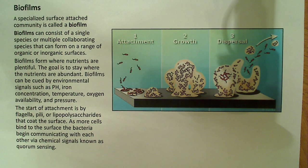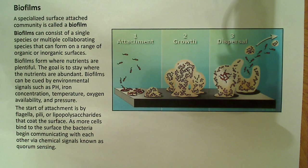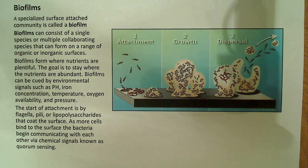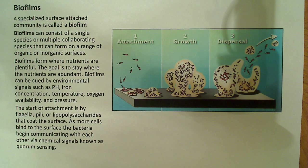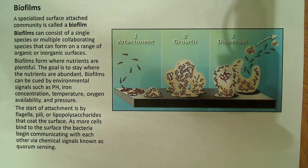Now that we have an intuitive sense of something in the environment that we can understand, let's talk a bit more specifically about what biofilms are. They're specialized surface-attached communities, and these biofilms can consist of a single species or multiple collaborating species that can form on a range of organic and inorganic surfaces.